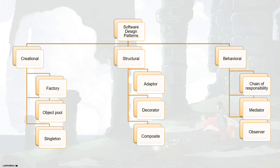There are three categories we can mainly identify in software design patterns: creational, structural, and behavioral. Creational design patterns deal with object creation mechanisms, trying to create objects in a manner suitable to the current situation. Under this category we can consider the factory pattern, object pool pattern, and singleton pattern. Let's look at each of these in a little more detail in the upcoming slides.